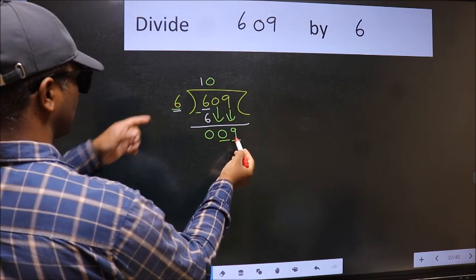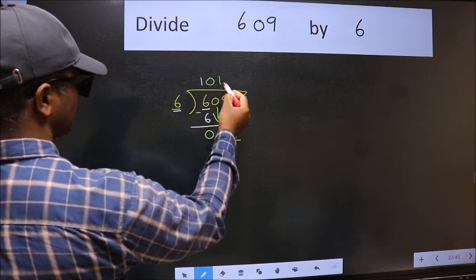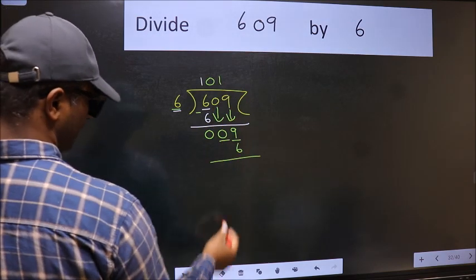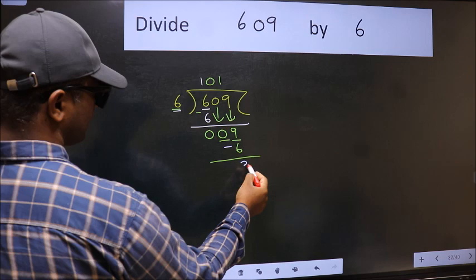Then only we can bring this number down. Now 9. A number close to 9 in 6 table is 6 once 6. Now we should subtract.